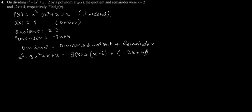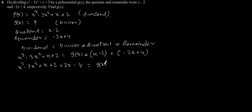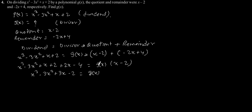By shifting the remainder part to the left-hand side, we get x³ minus 3x² plus x plus 2 plus 2x minus 4, which simplifies to x³ minus 3x² plus 3x minus 2, and this equals g of x into x minus 2.